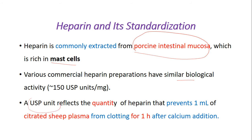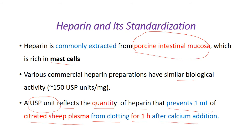The USP unit stands for United States Pharmacopoeia unit. It reflects the quantity of heparin that prevents 1 ml of citrated sheep plasma from clotting for 1 hour after calcium addition, and is required for calculation of the standard heparin dose.